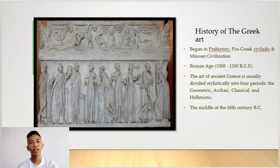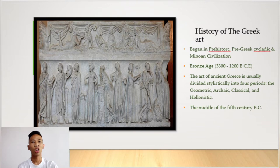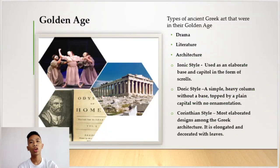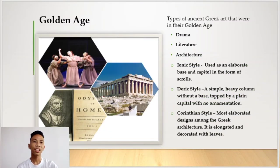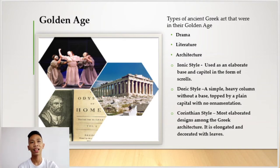The middle of the 5th century BC is known to be the golden age of Greek art. There were three types of ancient Greek art created in the golden age.